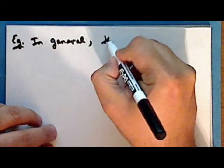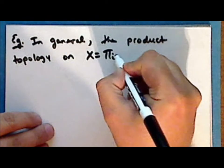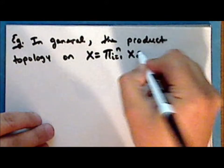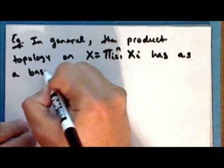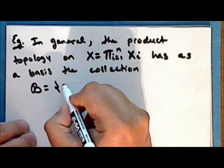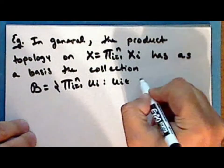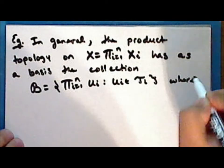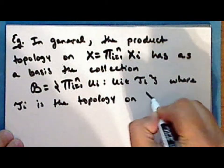In general, the product topology on the product set of N sets has as a basis the collection script B, consisting of the finite product of the sets U sub i, where U sub i is in the topology tau sub i, and tau sub i is the topology on the set X sub i.